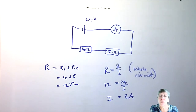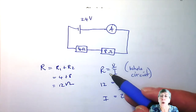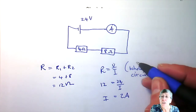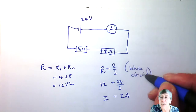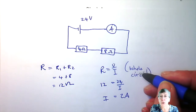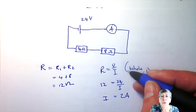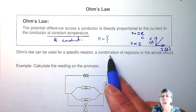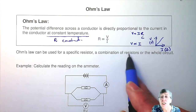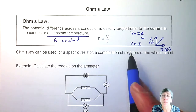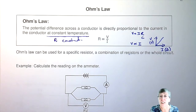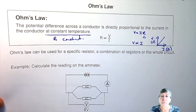So this is important: when you write R equals V over I, go and write down which part of the circuit you're using. Are you using the whole circuit? Are you using a combination — a parallel combination — or are you using a specific resistor? That will make sure you understand what you're putting in.